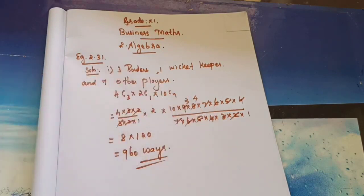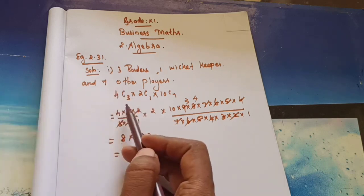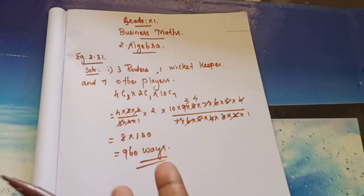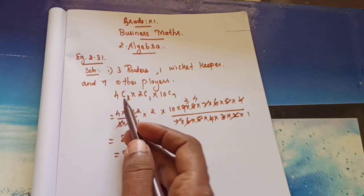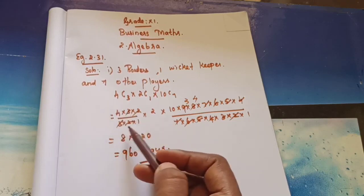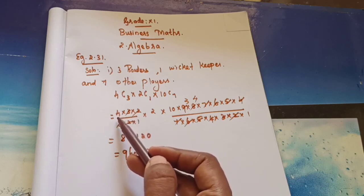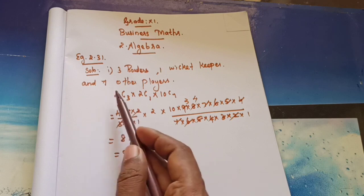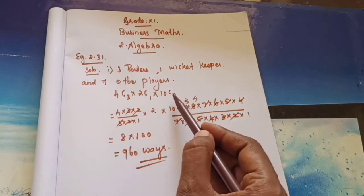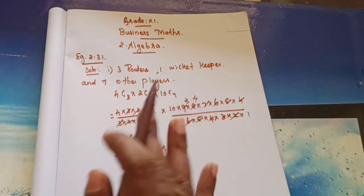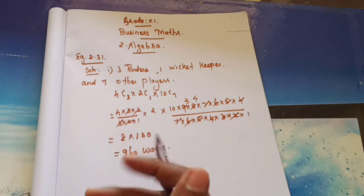Note that in the book, 4C3 is written as 4C1, and 10C7 is written as 10C3 — these are equivalent using the formula nCr = nC(n−r). You can use either form. The answer for case 1 is 960. Now let's move to the second part.